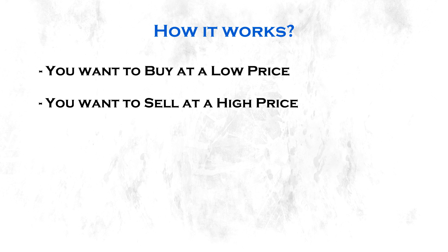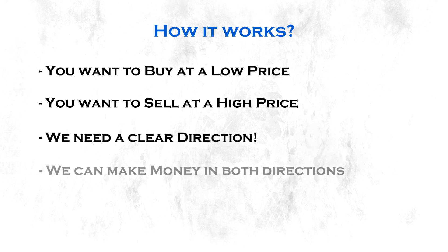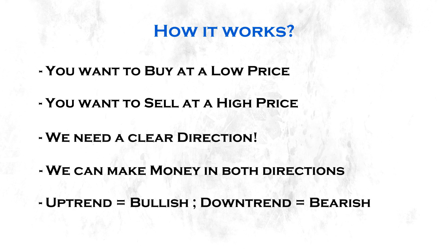In order to make money with forex we need a clear direction. The market has to move up or down and we can make money in both directions if we are right. When the market is trending upwards we call it a bullish market, and when it's moving downwards we call it a bearish market. That's all you need to know about how the markets work for now.